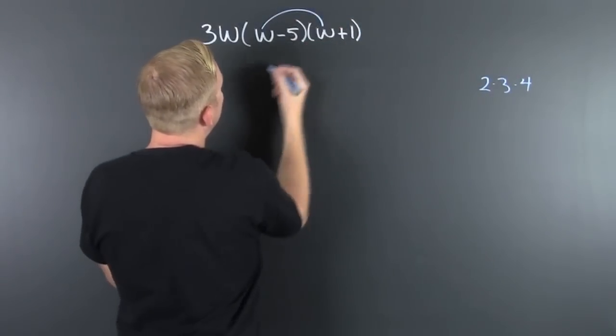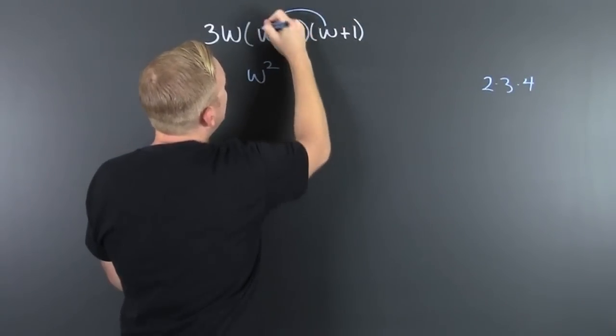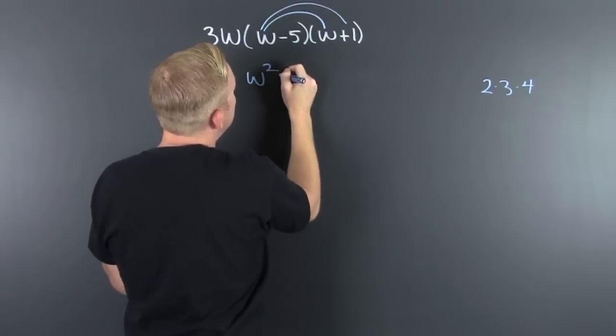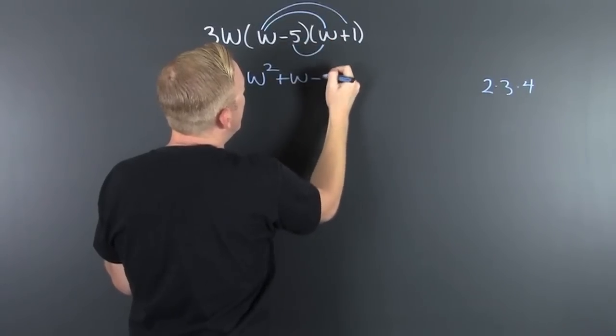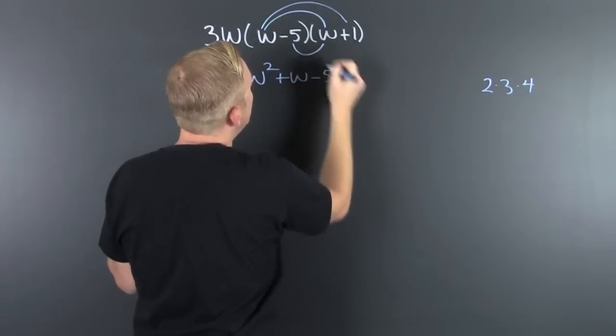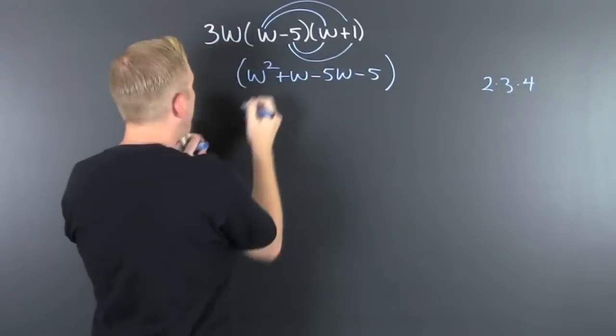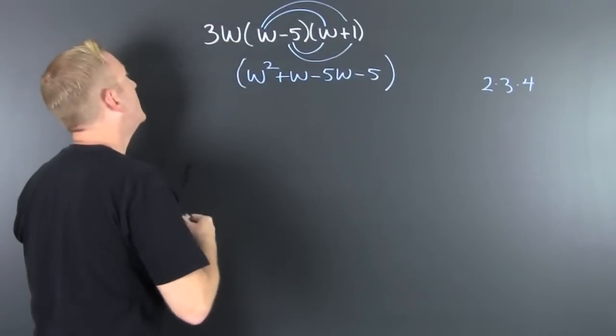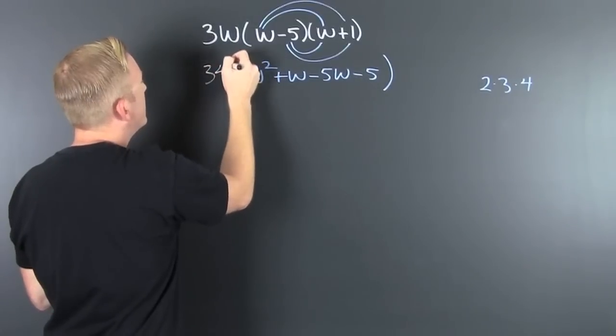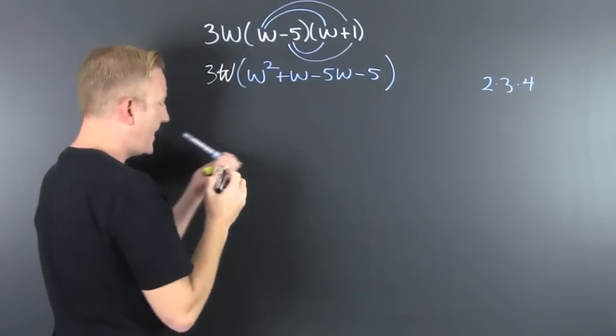So the first: that's W squared. The outer: that's plus W. The inner: minus five W. And then finally the last: minus five. Now all of that is still going to be multiplied by that three W.